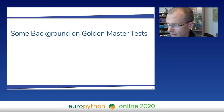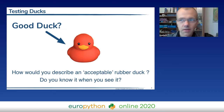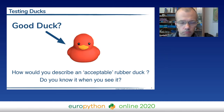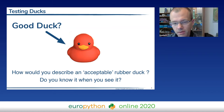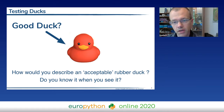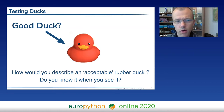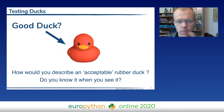Before we get started, let's have some background on what golden master testing is. Let's imagine it's the summer and you have a summer job working for somebody who produces rubber ducks — a lot of nice little rubber ducks. You're not a rubber duck expert, so you don't really know what a good rubber duck should look like or how much it should weigh. You don't have time to learn all these aspects of rubber ducks, but in the job you should do some quality control — decide if a duck is good or bad.